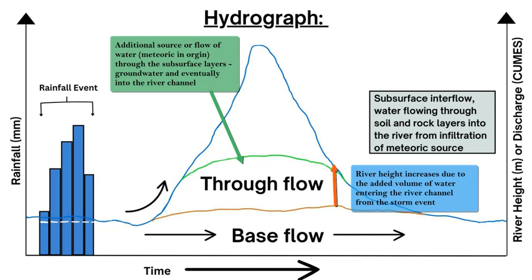With the hydrograph you see an added section of water — additional discharge shown by the increase in the blue line above the base flow — as a result of the added water from the rainfall event making its way into the river network. This additional amount of water on top of the base flow is called through flow. Through flow comes from the soil, rock layers, and bedrock — initially from the meteoric rainfall source infiltrating the surface of the watershed based on permeability, porosity, surface type, and geology — and it flows into the river channel in addition to the base flow, naturally increasing the river height.